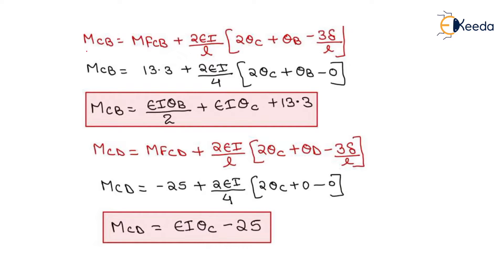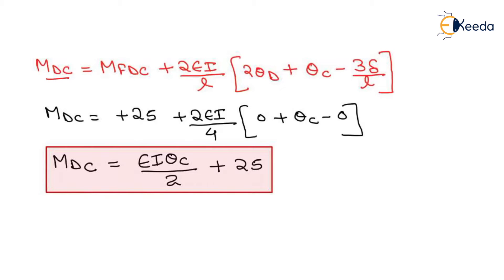For MCB, using MF_CB + (2EI/L)(2θC + θB − 3Δ/L) with Δ = 0, we get MCB = EIθB/2 + EIθC + 13.3. For MCD, since θD = 0 due to the fixed support at D and Δ = 0, we get MCD = EIθC − 25. For MDC, with θD = 0 and Δ = 0, we get MDC = EIθC/2 + 25.